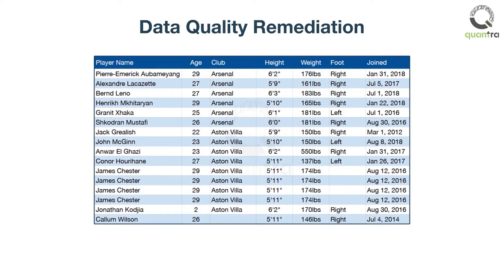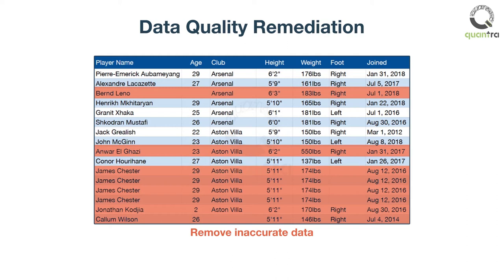In that case, a simple approach is to remove the inaccurate data. This can work well if you have a few inaccurate data points. But if there are many records with data quality problems, then this approach can reduce the data size, resulting in a poor analysis.